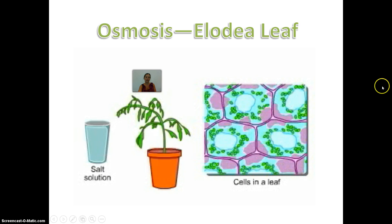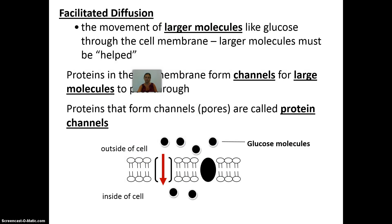For example, if we took an Elodea cell — the aquarium plant you looked at in the microscope — and put it in a salt solution, it would cause the water inside the Elodea cells to leave. This would send a rush of water outside the cells, causing the plant to wilt. You do not want to put Elodea, which is a freshwater plant, into salt water.